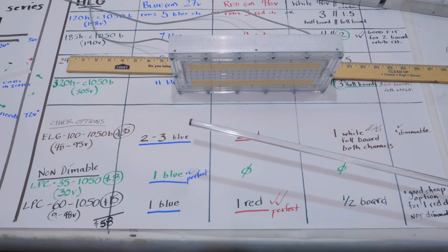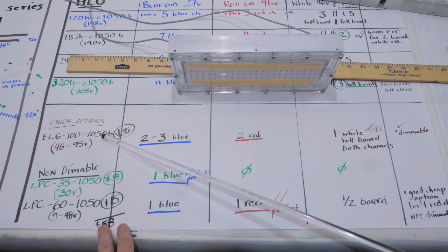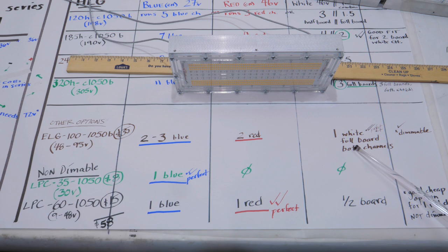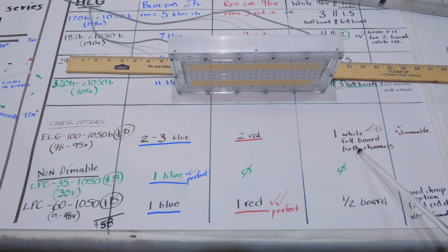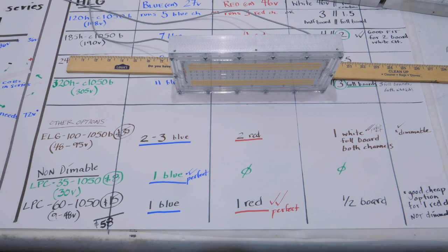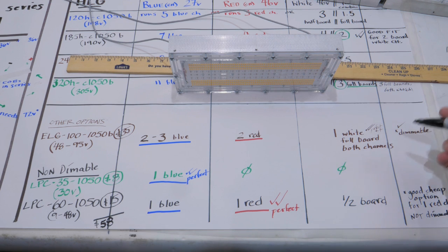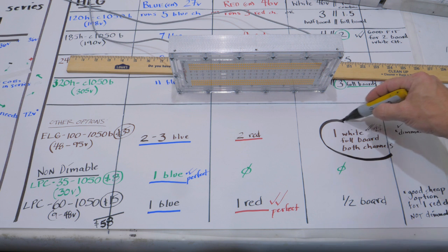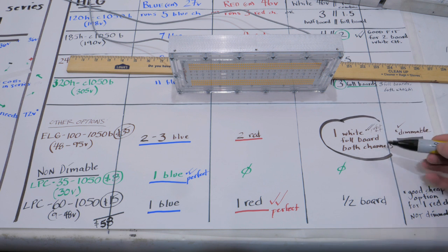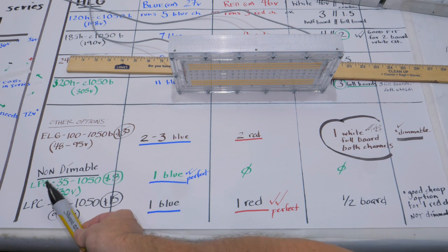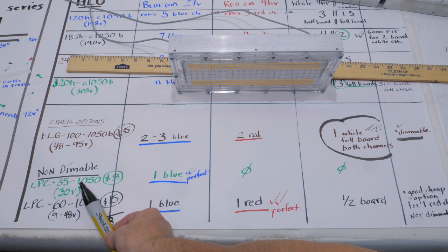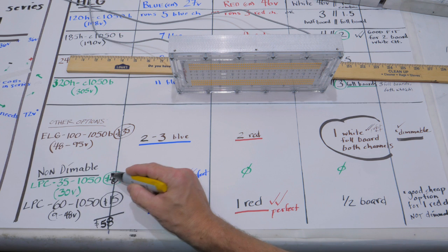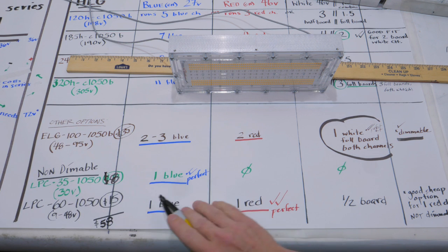Another driver option is the ELG series from Meanwell. It's very similar to the HLG, it's a little cheaper. They're about $35 and they are dimmable - you'll notice the B at the end on my little spreadsheet here. It can handle a minimum of 48 volts all the way up to 95, so it's going to be a great option. Let's say you ran the HLG 320 that I mentioned for three white boards, three white channels of the boards. This would want to run the three blue sections. This would be a good driver for that. Or if you're doing a two board config, this will run your two reds or one white board.